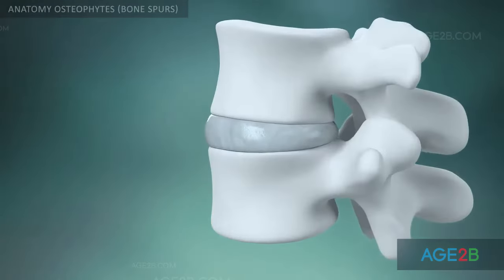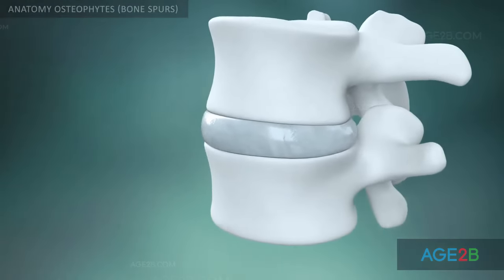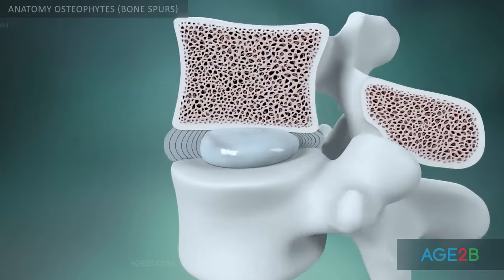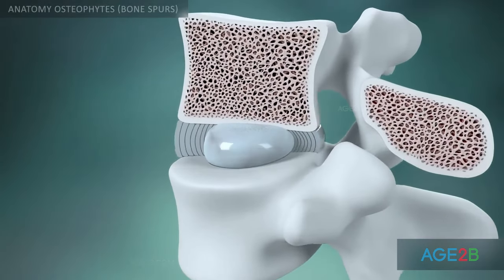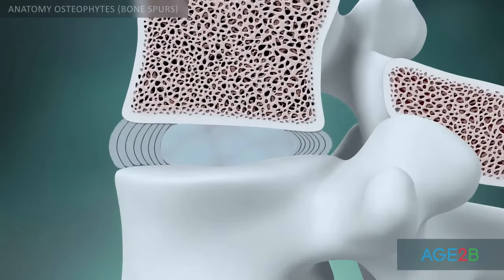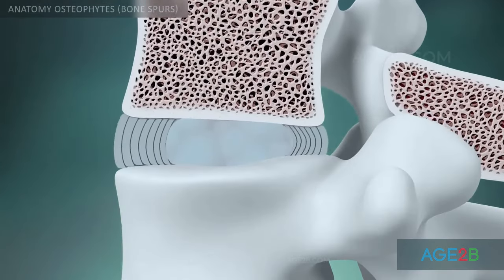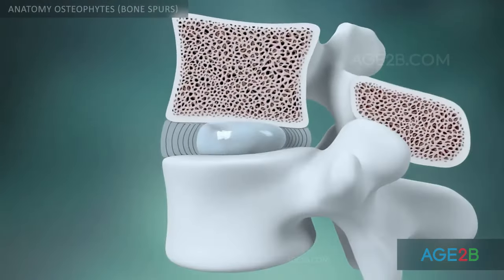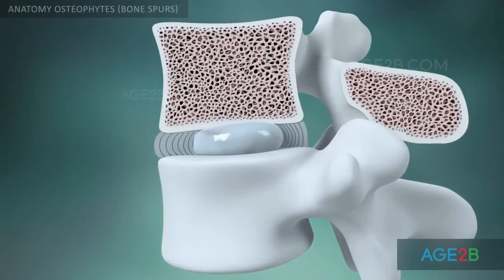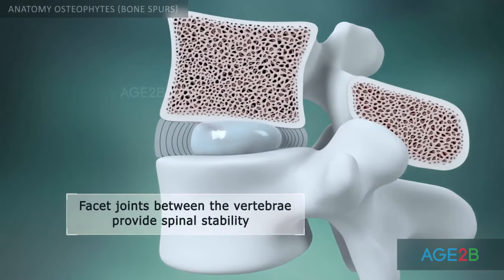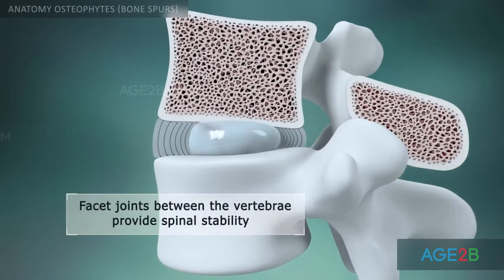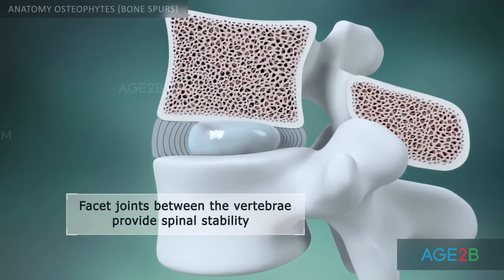An intervertebral disc acts as a shock absorber between each of the vertebrae in the spinal column by keeping the vertebrae separated when there is an impact from activity.